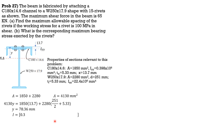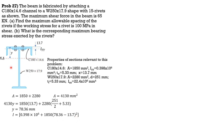The moment of inertia of the composite section: I equals the moment of inertia of the channel (I_yy = 0.398 × 10⁶) plus the area of the channel (1850) times the distance squared, where the distance is (y − 13.7). That gives the channel's contribution. Then we add the moment of inertia of the wide flange.